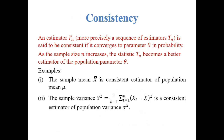Consistency is a property of large samples. An estimator Tn — more precisely, a sequence of estimators Tn defined in terms of sample size, where T1 is the first member, T2 the second, T3 the third — is said to be a consistent estimator if it converges to parameter theta in terms of probability. That means as the sample size increases, the statistic Tn becomes a better estimator of the population parameter theta. For example, the sample mean x-bar is a consistent estimator of the population mean mu. Similarly, the sample variance s-square is a consistent estimator of the population variance sigma-square.